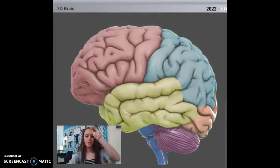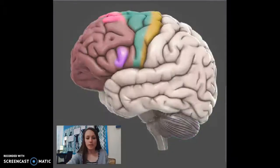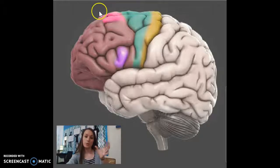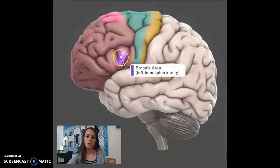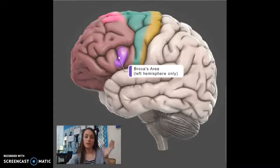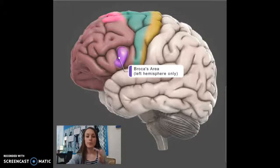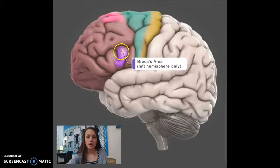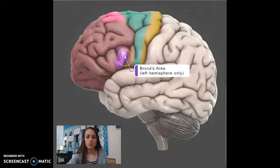Now I'm going to tell you about a few of the parts that exist on the lobes that are important. I've got my frontal lobe isolated here, and this is actually the left side — and that's important. The left side of the brain has a part called Broca's area, here in purple, and it is only in the left side of the frontal lobe. Broca's area is responsible for the ability to make and produce speech — right here in purple, it's really small.